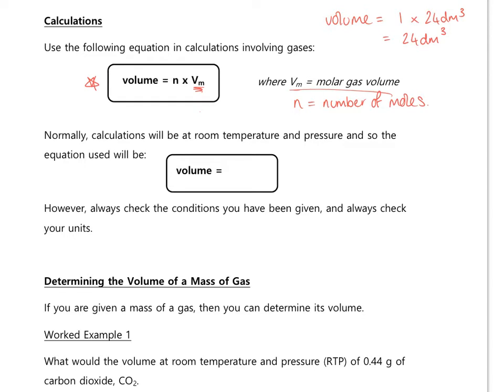For calculations at room temperature and pressure, the equation to learn is: volume = n × 24, since the molar gas volume equals 24 dm³ at RTP. I will often abbreviate this to vol = n × 24. That's a new equation to learn, and you can use it any time your calculations involve gases.